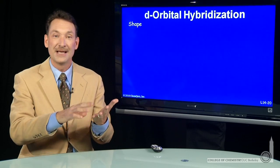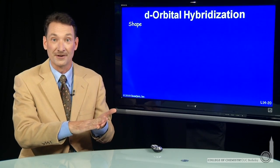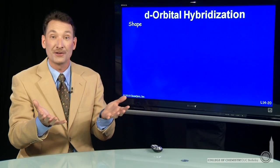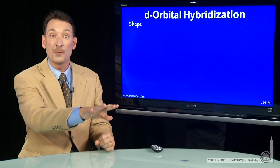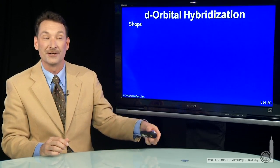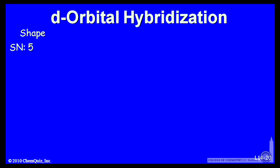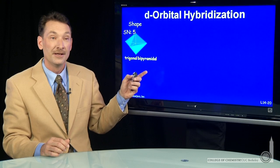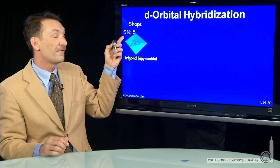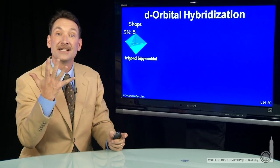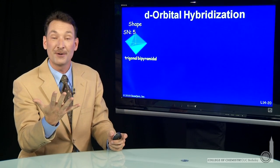So you can hybridize s, p, and d orbitals together to form atomic orbitals that have geometries appropriate for the molecular geometry. If you have a steric number 5, that's a trigonal bipyramidal shape. That's one, two, three, four, five things I have to accommodate. I need to hybridize together five atomic orbitals.